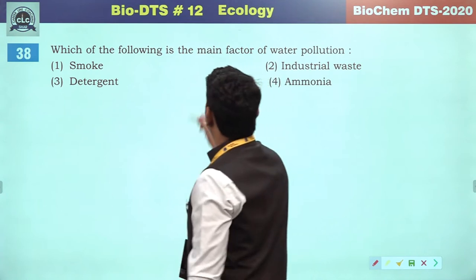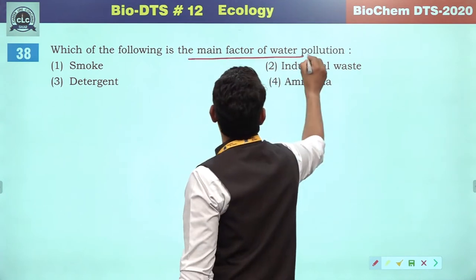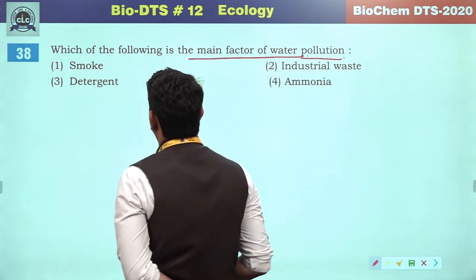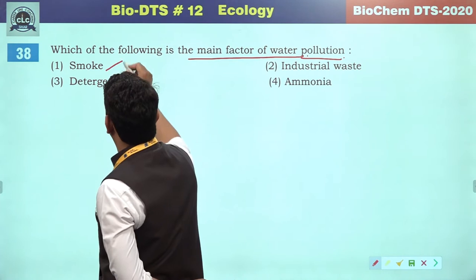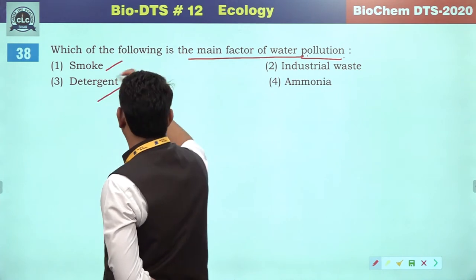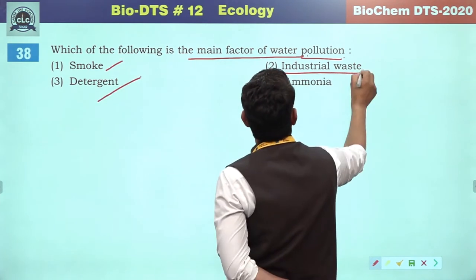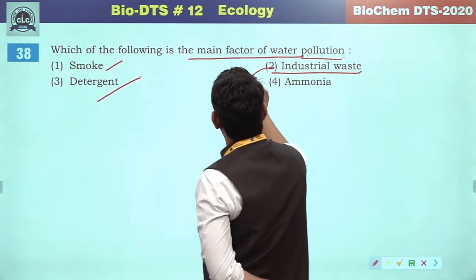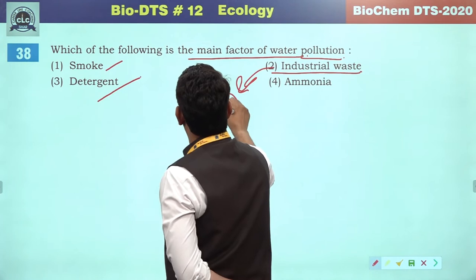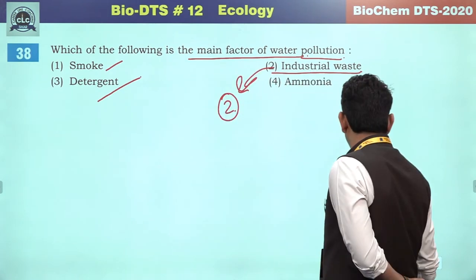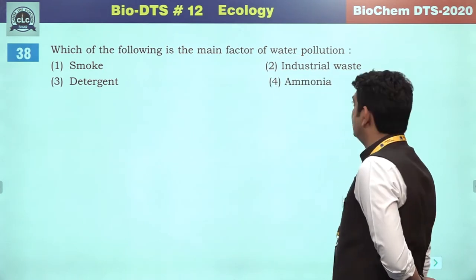Which of the following is the main factor of water pollution? Smog relates to air pollution. Detergents can cause water pollution, but industrial waste will be the most important factor to cause water pollution.